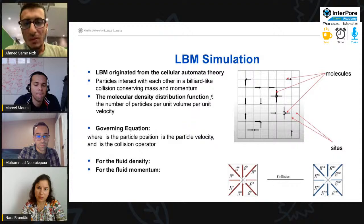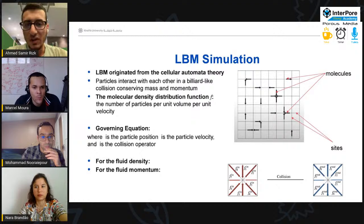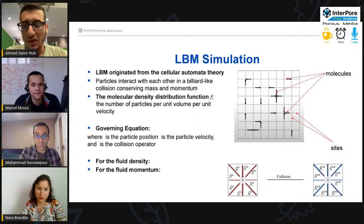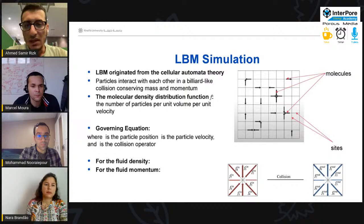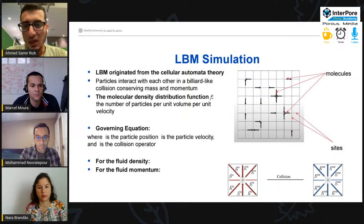Here is a lattice-Boltzmann simulation to calculate the SOR. And why do we choose lattice-Boltzmann? Because it has been widely described in the literature that this method is accurate as it does not simplify the pore structure. And the original theory of it is the cellular automata theory, which represents the fluids as particles interact with each other in a billiard-like collision. And we can define what is called the molecular density distribution function as the number of particles per unit volume per unit velocity of the fluid. And we use a governing equation to simulate the evolution of the behavior of this density distribution function with time. And by relating this density distribution function to the macroscopic properties such as fluid density and fluid momentum, we can obtain the macroscopic flow properties.